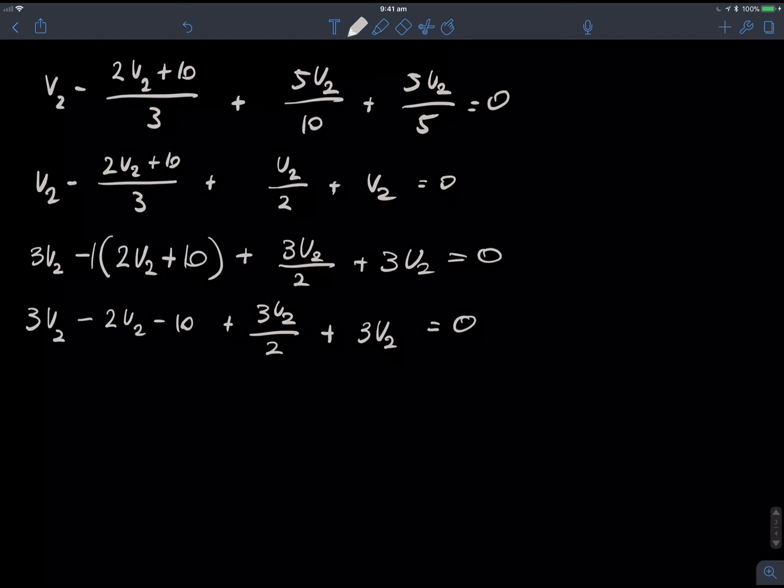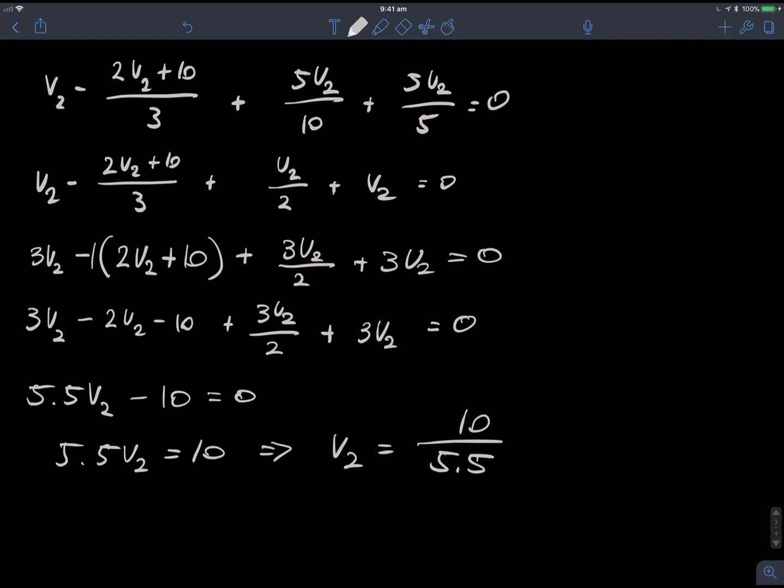So, we've got 3 here, 2 there, and then 3 over 2 up there, and then 3. So, just putting that in the calculator, 3 minus 2 plus 3 halves plus 3 is 11 over 2, or I'll just say it's 5.5V2. And then, don't forget that minus 10 equals 0. So, now we can easily solve for V2. And we've got V2 equals 10 divided by 5.5. And if we're going to put that in decimal form, that's about 1.82 volts.